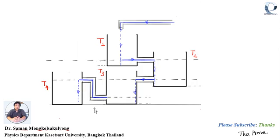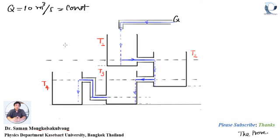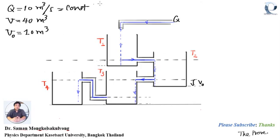Look at my model. I let the water flow with a constant rate Q. In our model, I assume Q equals 10 mq per second, a constant. Each tank can contain a volume of water equal to V, where V equals 40 mq. If the water equals this level, the water volume V0 equals 10 mq, and this upper level is approximately 3 times V0.